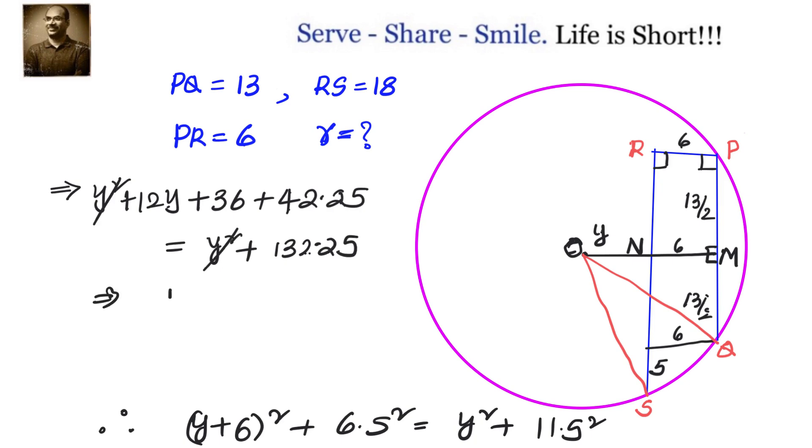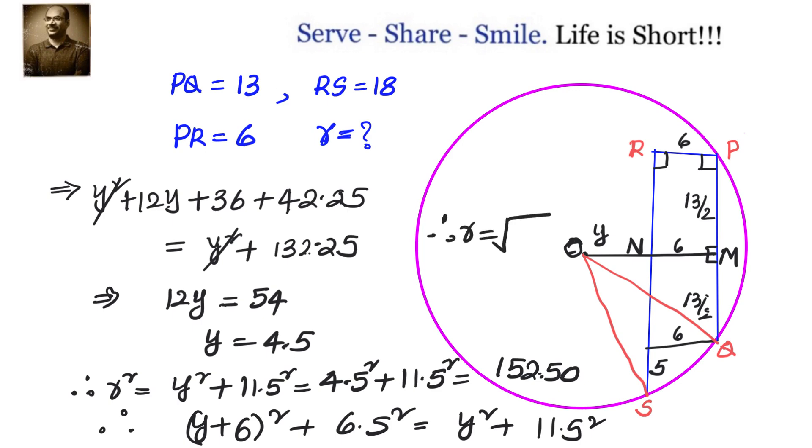11.5² is 132.25. Y² cancels on both sides. So 12Y + 36 + 42.25 equals 132.25. That is 12Y + 78.25 equals 132.25, which gives us 12Y = 54, so Y = 4.5. Now Y² + 11.5² equals R², so R² = 4.5² + 11.5² = 20.25 + 132.25 = 152.5. R equals square root of 152.5, that can also be written as square root of 610 by 4, or approximately its value equals 12.35.